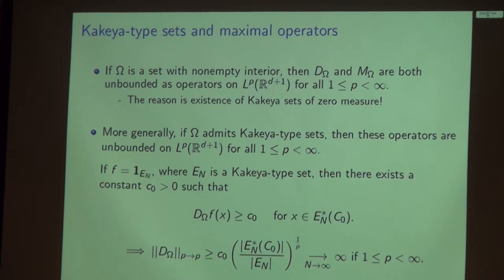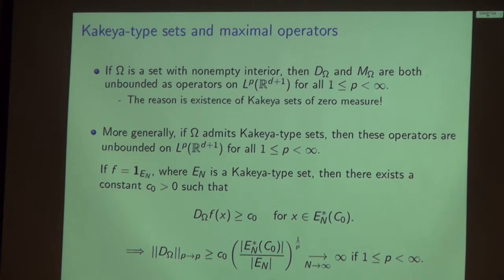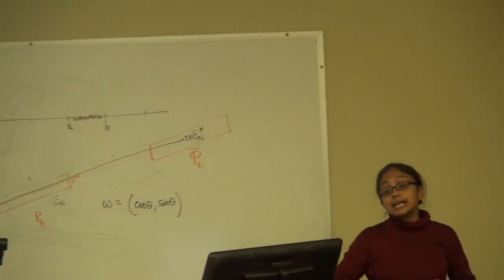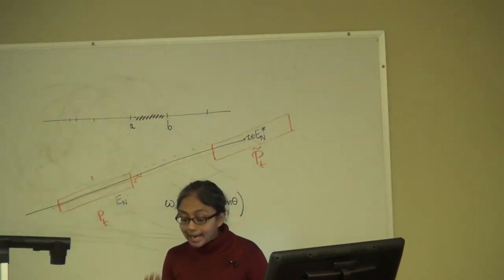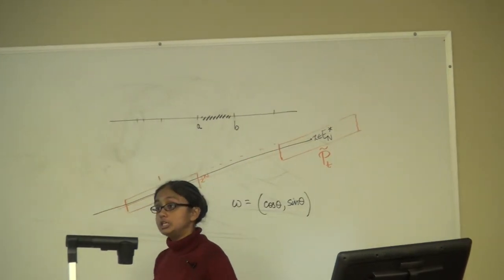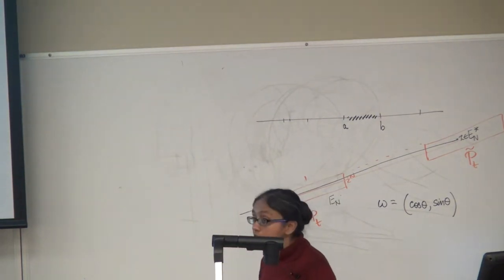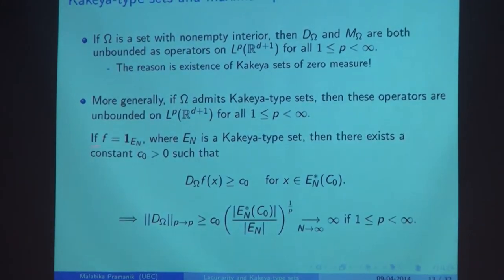Here's the argument — likely the only proof today. If you have Kakeya-type sets, pick a point x in E_n*. For every such point, there is a line segment originating at x that spends a positive proportion of its length in E_n. That gives a lower bound: the directional maximal operator evaluated at x is uniformly bounded away from zero on E_n*. The L^p operator norm of D_ω is then bounded below by the ratio |E_n*|/|E_n| raised to an appropriate exponent, and by definition of a Kakeya-type set, that ratio goes to infinity.